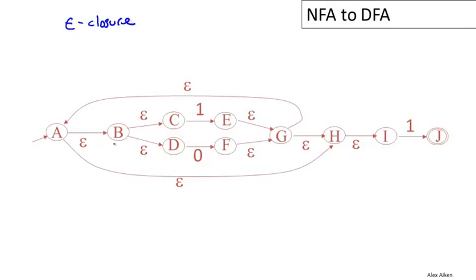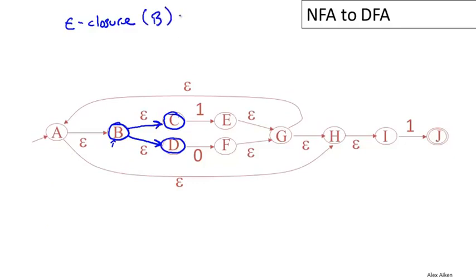The first thing we're going to discuss today is an important idea called the epsilon closure of a state. The basic idea of the epsilon closure is that I pick a state — it could be a set of states, but we'll just do it for a single state — and then I look at all the states that I can reach by following only epsilon moves. B is the state we're starting with, so B would be included in the set. There's an epsilon move to C, so C would be included, and another epsilon move to D, so D would be included. So the epsilon closure of B equals the set {B, C, D}.